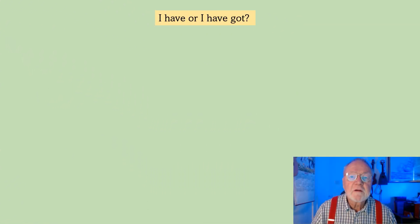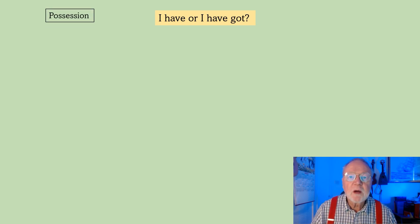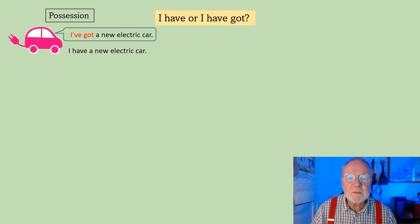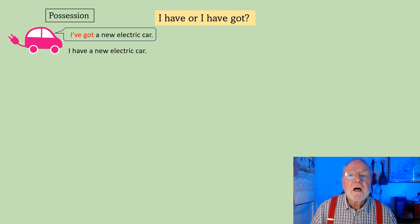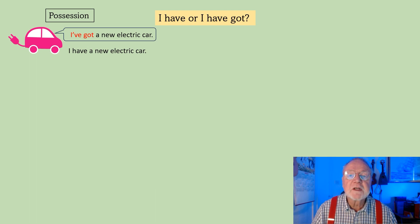I have or I have got really comes down to whether we're speaking or writing. If we're talking about possession — that's owning something — I would say I've got a new electric car. I've contracted the have to I've. But if I was being formal, or perhaps writing something, I would say I have a new electric car.